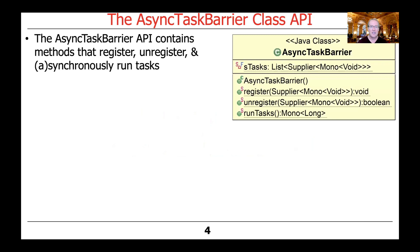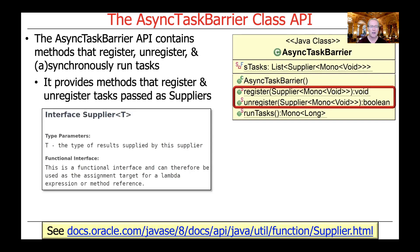The Async Task Barrier API contains methods that register, unregister, and run tasks, which can either run synchronously — in other words, blocking — or asynchronously, doing computations in the background.